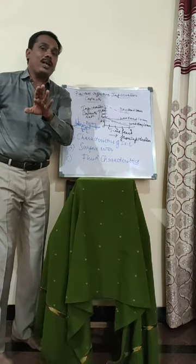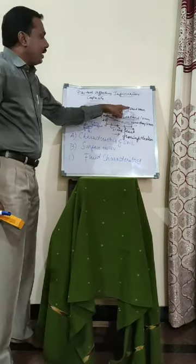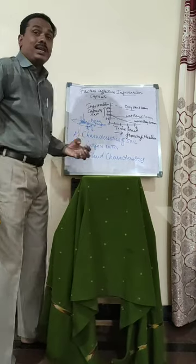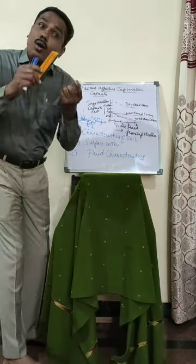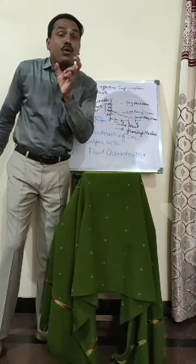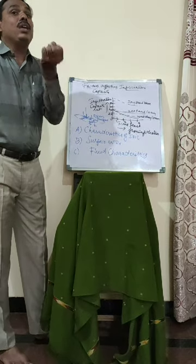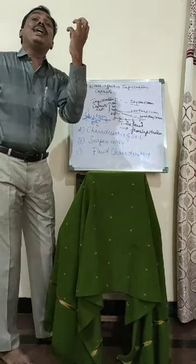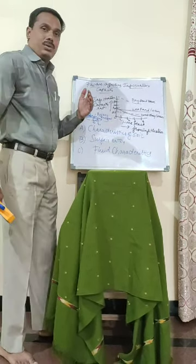To summarize the factors affecting the infiltration capacity: in dry sand loam, the infiltration rate is very high, while in wet clay loam, the infiltration capacity is very low. Surface entry depends on the water type — whether it is a drizzle or a larger amount of precipitation — and also on the nature of the soil surface. Fluid characteristics refer to water chemistry and total dissolved salts; if a large number of dissolved salts are present, it affects the infiltration rate compared to pure water. Thank you.